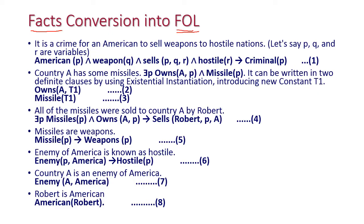For the facts conversion into first-order logic: the statement 'it is a crime for an American to sell weapons to hostile nations' involves three variables applied to American, weapon, and hostile nation. This converts to: American(p) ∧ Weapon(q) ∧ Sells(p, q, r) ∧ Hostile(r) ⟹ Criminal(p). This is the first statement in first-order logic form.